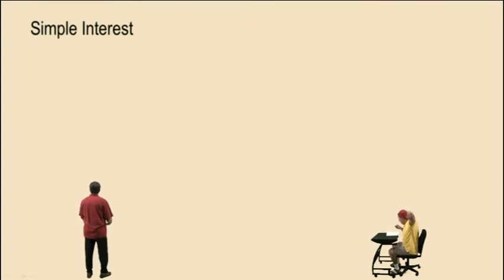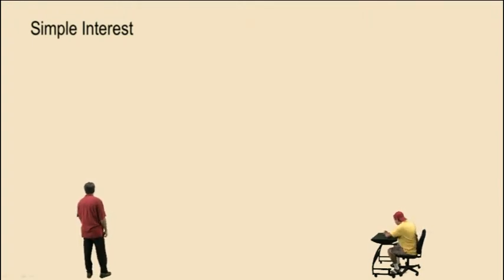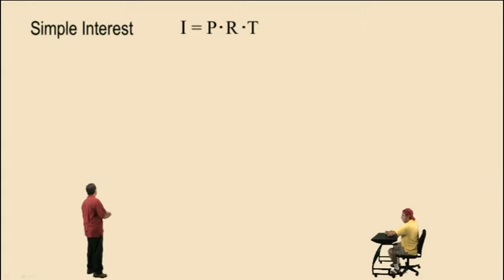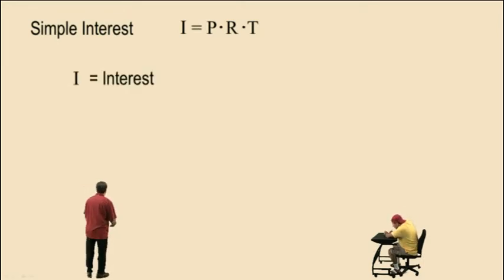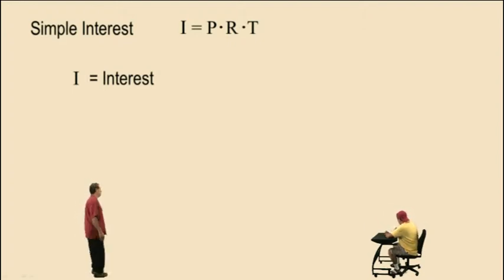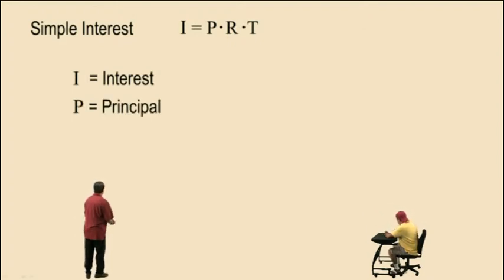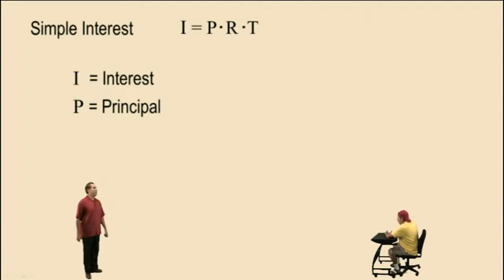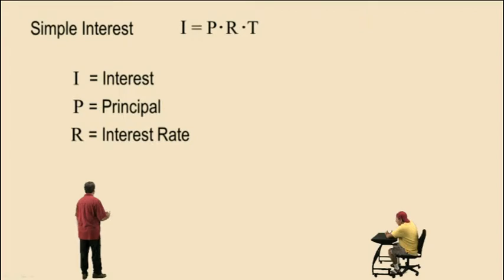Simple interest. The formula for simple interest is really simple: it's I equals PRT. I represents the amount of interest — if you take out a loan, it's the amount of interest you have to pay back. P represents the principal, that's the amount of the loan.